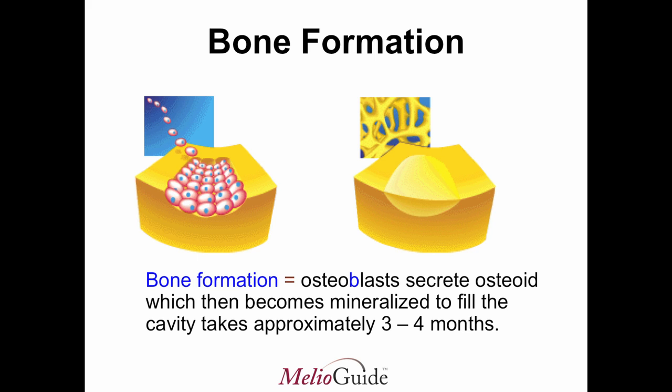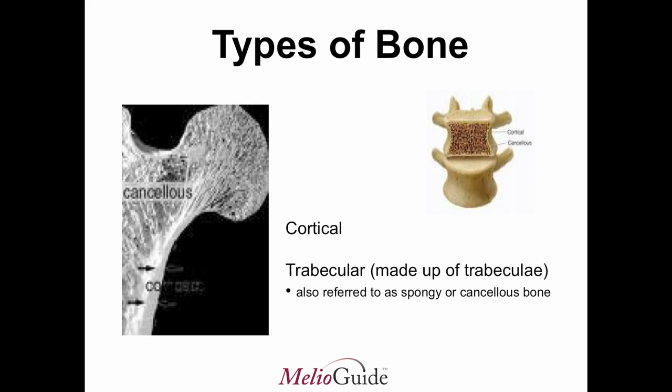Another important thing when it comes to osteoporosis is understanding types of bone. When we look at types of bone, I've brought up a couple of visuals. There are two types of bone that are really helpful to understand, to understand why fractures occur in certain parts of our body.